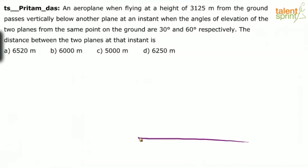So what do we do? Let's say this is the ground level. Now he says an aeroplane is flying at a height of 3125. Let's say this is the first aeroplane A1. It is flying at a height of 3125, this distance from the ground. It passes vertically below another plane, so another plane is flying on top at this level. Let's say this is the second plane A2, vertically below that plane.